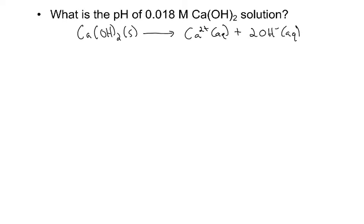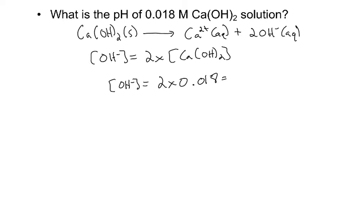So I would write that as the concentration of hydroxide is two times the concentration of the calcium hydroxide. So the hydroxide is going to start off at 0.036 molar.